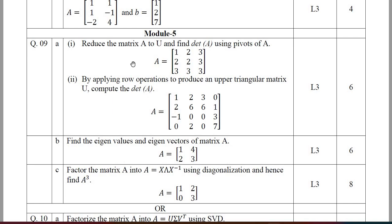The last module is again a very simple module. I suggest solving Module 4 and Module 5 first, then moving on to Modules 1, 2, and 3, since Modules 1–3 form one variety of problems and Modules 4–5 form another. Question 9A: given matrix A, find the determinant of A using pivots. By applying row operations to produce upper triangular matrix U, compute the determinant of A.